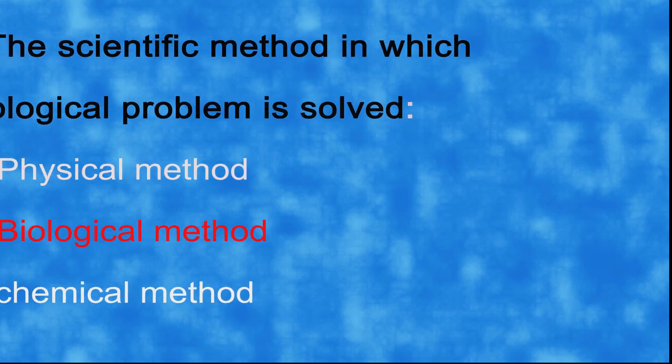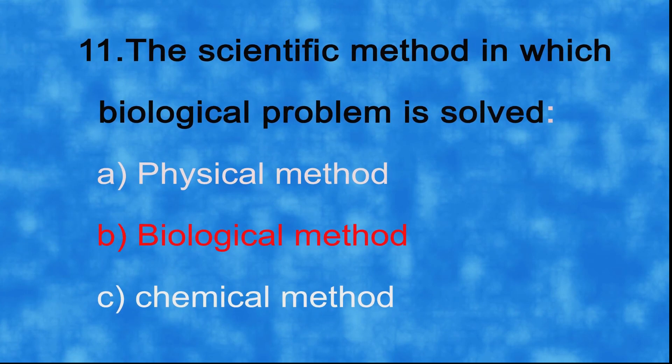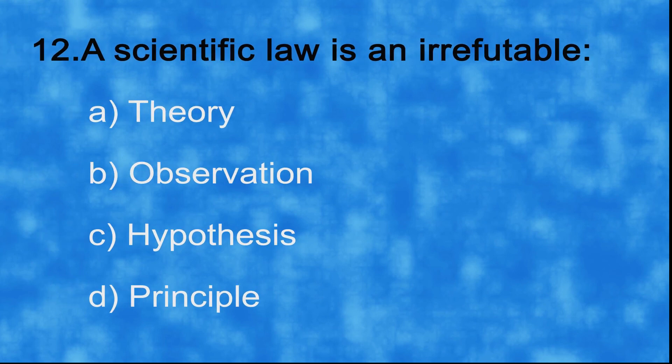And the correct answer is a) theory. A scientific law is an irrefutable a) theory, b) observation, c) hypothesis, d) principle.